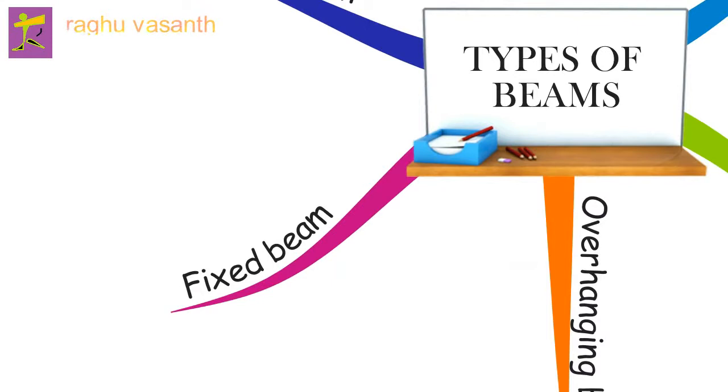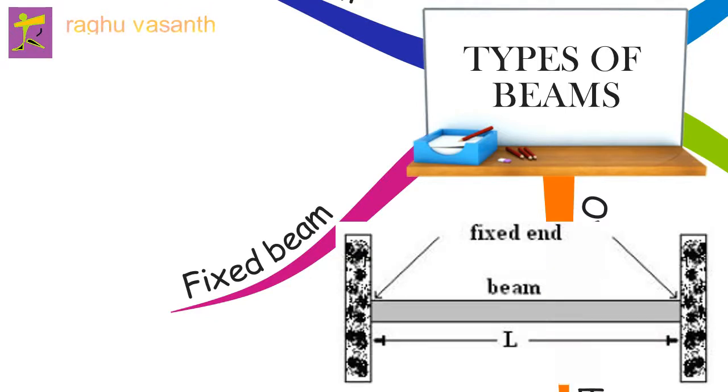A fixed or built-in beam has both ends rigidly fixed so that the slope at the ends remains zero. Such a beam is also called an encaster beam. The fixed ends give rise to fixing moments in addition to the reactions.